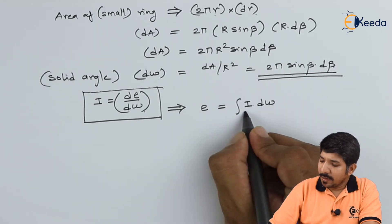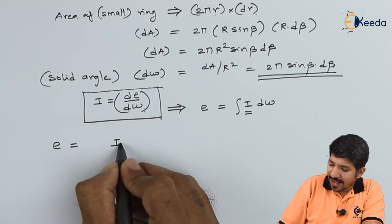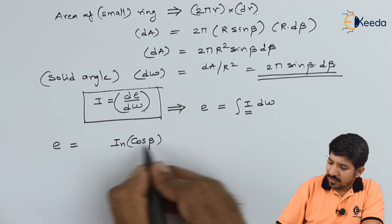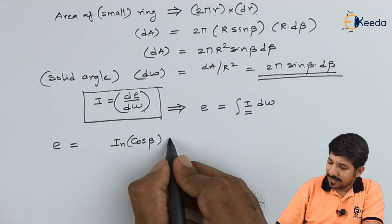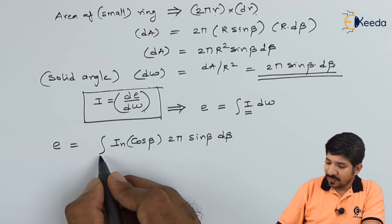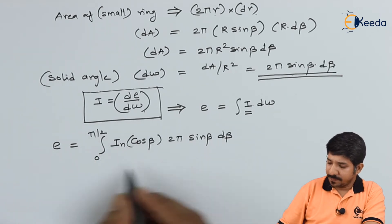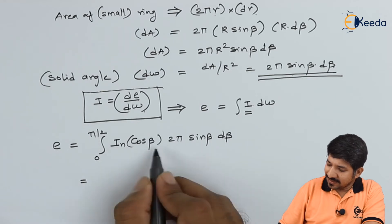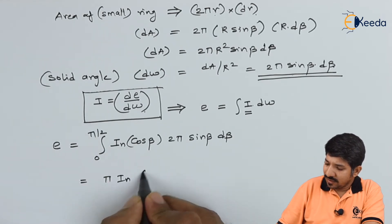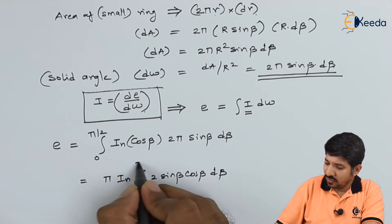The limits will be from 0 to π/2 for the hemisphere. By Lambert's cosine rule, I can write down the value of I as IN·cosβ, where IN is a constant. And d-omega is 2π·sinβ·dβ. So the total emissive power E equals the integral from 0 to π/2 of IN·cosβ·2π·sinβ·dβ, which can be rearranged as 2π·IN times the integral from 0 to π/2 of sinβ·cosβ·dβ.